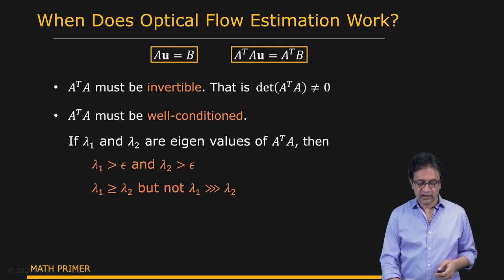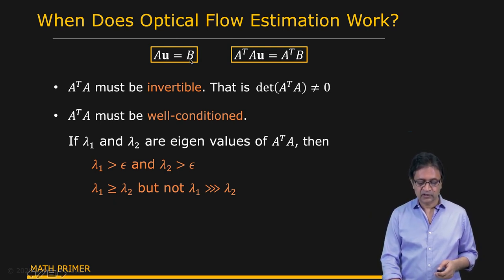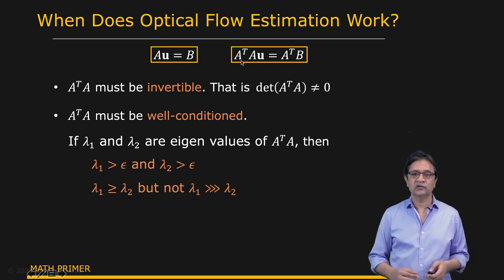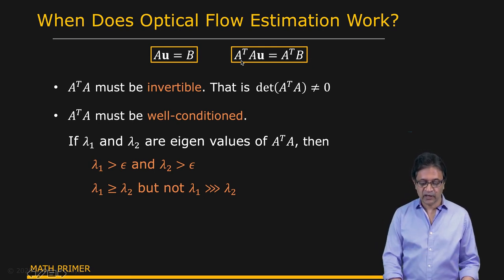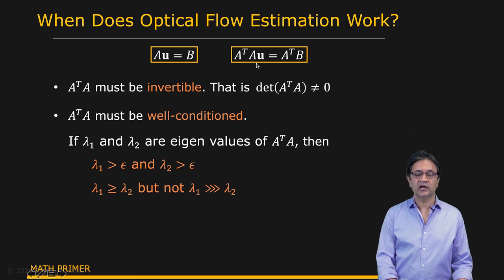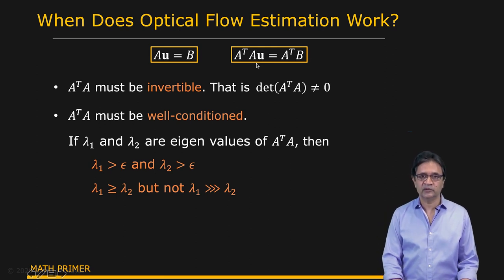So even when you have a simple system such as this, Au equal to B, in this particular case it is going to be well-conditioned if the matrix A transpose A is well-conditioned. Then you're going to have a good, robust, reliable solution for the optical flow u.